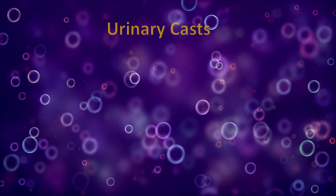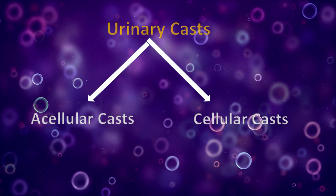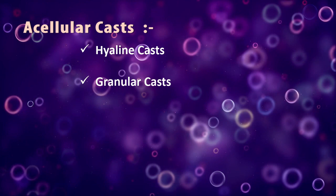Urinary casts can be divided into two main categories: acellular casts and cellular casts. Acellular casts include hyaline casts, granular casts, waxy casts, and fatty casts.